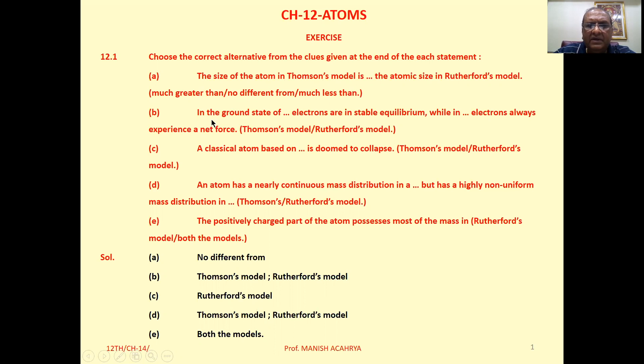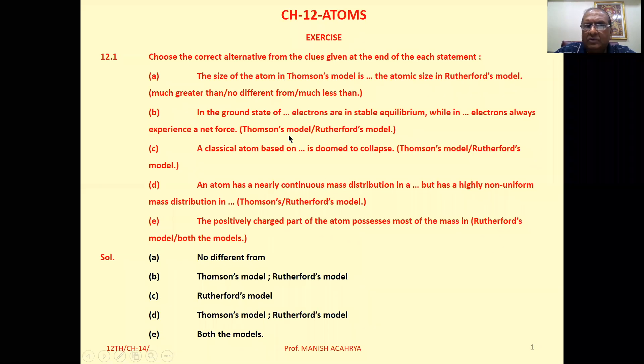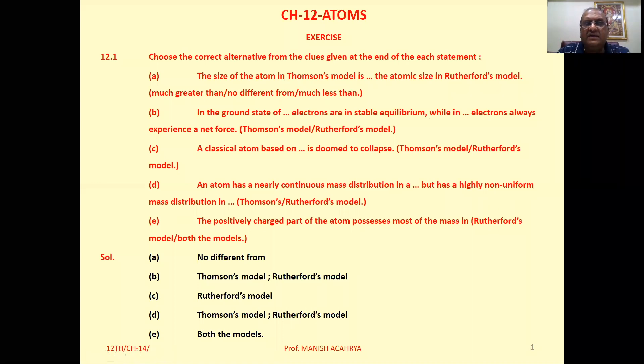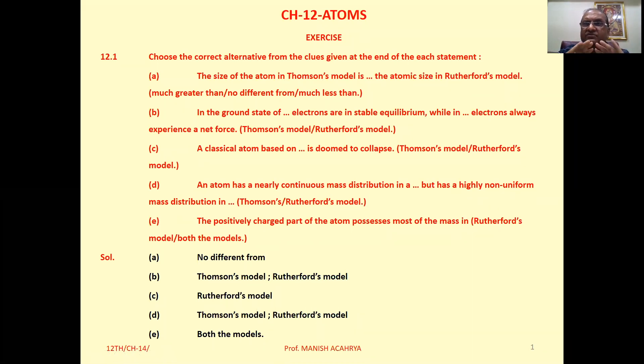B: In ground state of blank, electrons are in stable equilibrium, while in blank electrons always experience a net force. Options: Thomson's model or Rutherford's model. So in first blank here we have to take Thomson's model. In the ground state of Thomson's model, electrons are in stable equilibrium because we considered the entire positive charge is uniformly distributed in the atom and electrons are embedded in it. So it will be in stable equilibrium from